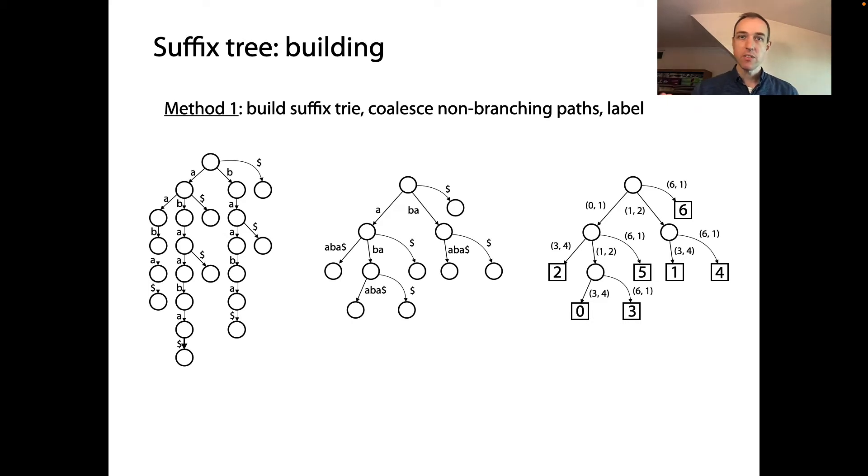However, this has a bottleneck which is that the initial trie data structure is too big. That data structure is O(M²) space. The size of the data structure in terms of the number of nodes and edges is growing quadratically with the length of the input string. So it would seem we would rather not do it this way. We don't want to build the big data structure first and then refine it into the smaller data structure.